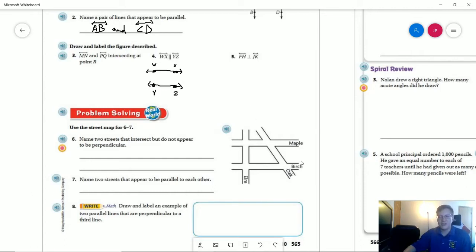So our two options would be Oak and Birch and Oak and Maple. So here's one of those intersections and then here would be the other.